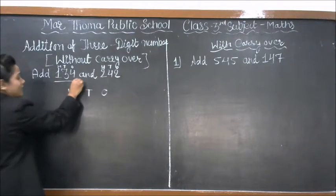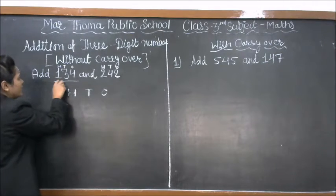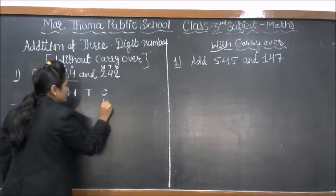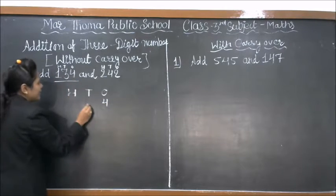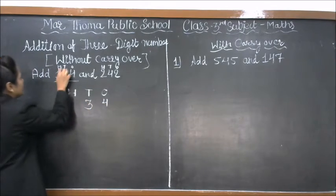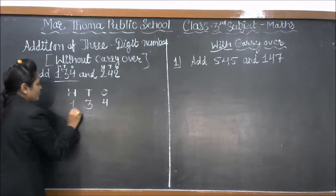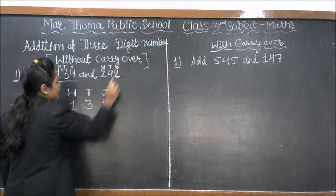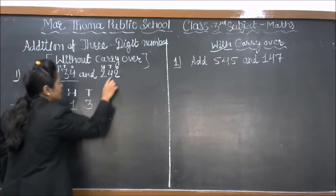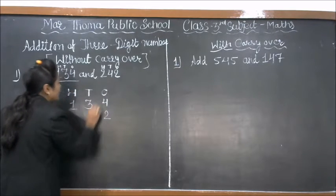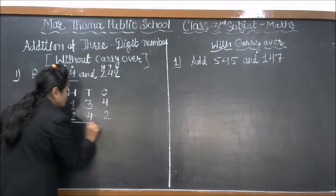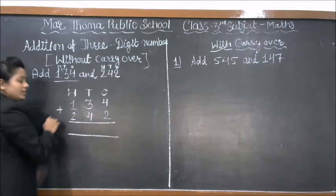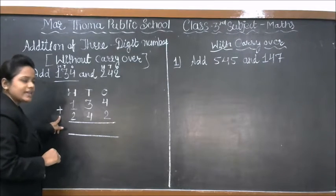First we take the number 134. In ones value we write 4, in tens value 3, and in hundreds value 1. The next number is 242: ones value 2, tens value 4, and hundreds value 2. We write the addition sign.